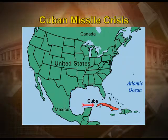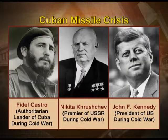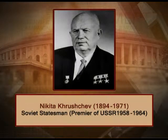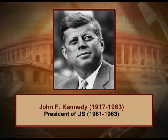As you can see in the map, Cuba is quite close to the southeastern part of the United States, in the Atlantic Ocean. The picture shows the leaders of the three nations involved in the Cuban Missile Crisis. Fidel Castro was the authoritarian leader and president of Cuba from 1976 till 24th February 2008. Nikita Khrushchev was premier of the USSR during the Cold War. And John F. Kennedy was the 35th president of the United States, serving as president during the Cuban Missile Crisis.